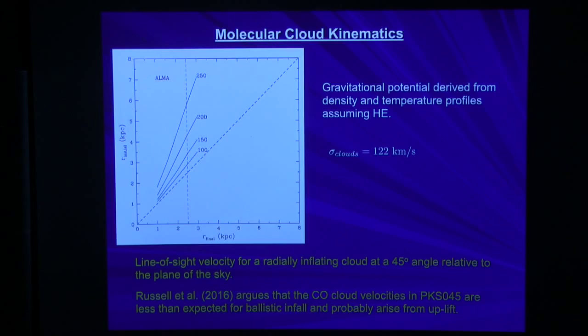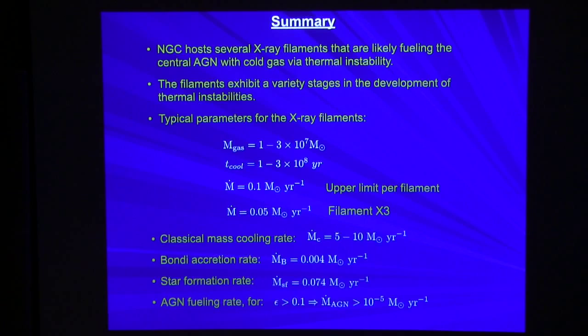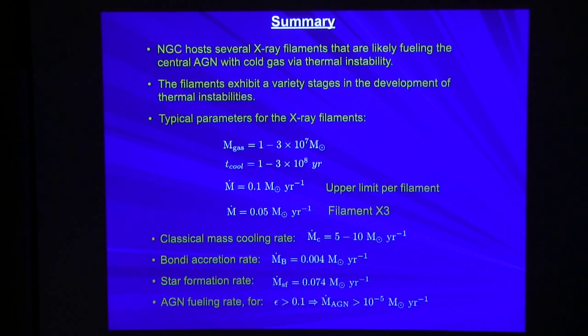Summary: NGC 5044 hosts many thermally unstable filaments which likely fuel star formation and the AGN. You are seeing these filaments in a variety of evolutionary stages. Gas masses in the filaments are a few × 10^7 solar masses, with cooling times of order 10^8 years. In filament X3, the M-dot of the coolest 0.4 keV gas is about 0.05 solar masses per year, comparable to the star formation rate. The spectroscopic cooling rate in filament X3 alone is ten times the Bondi accretion rate, so accretion of cold gas could easily outweigh accretion of hotter gas.